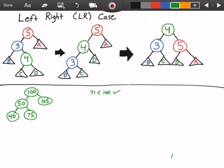We get to the node that contains the value 50 and check to see if 71 is less than 50. It's not, so we're going to go to the right of 50. We get to the node that contains the value 75 and check to see if 71 is less than 75. And it is. So we go to the left of 75 and insert the value 71 into our AVL tree.